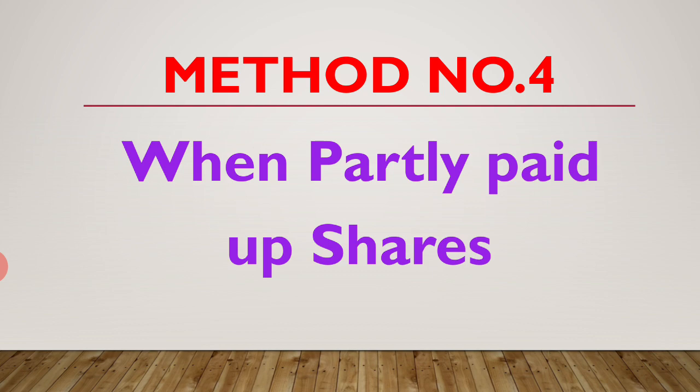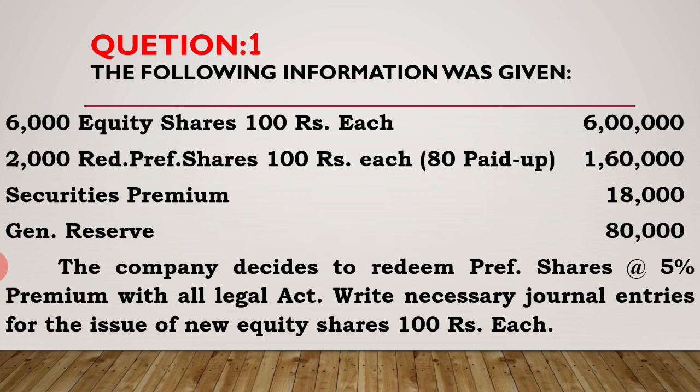Now we discuss one question. Question 1 — the following information was given: 6,000 equity shares, 100 rupees each, 6 lakh rupees. 2,000 redeemable preference shares, 100 rupees each, bracket 80 paid up, so 2,000 into 80 = 1 lakh 60,000. Here preference shares are partly paid up because only 80 rupees per preference share is paid up.